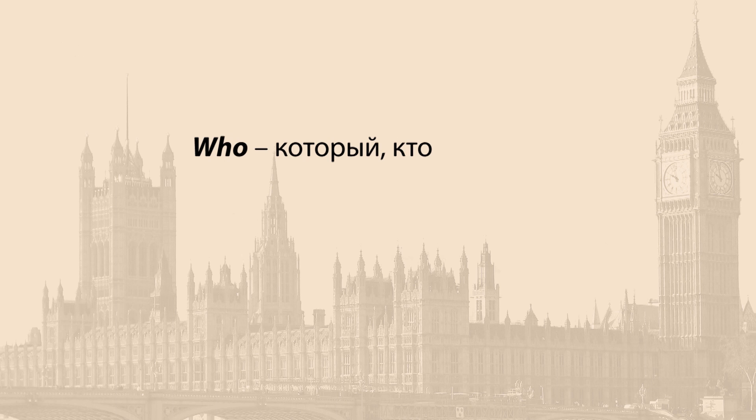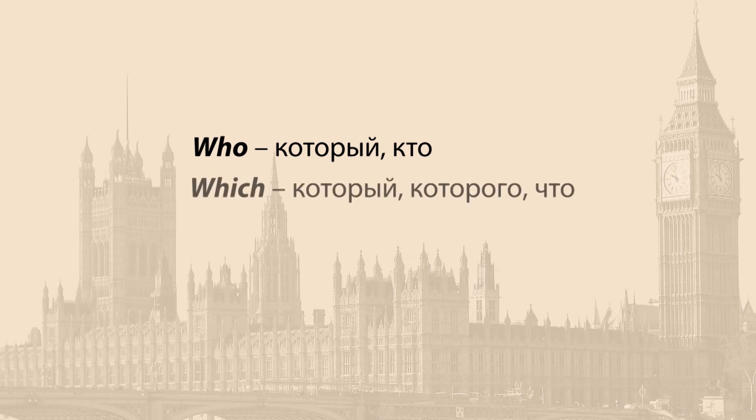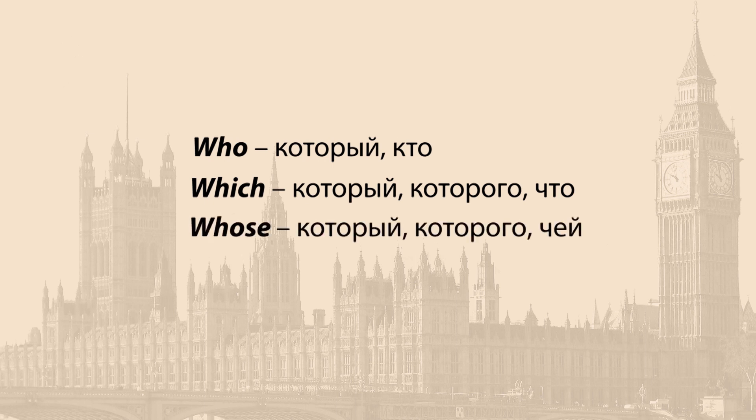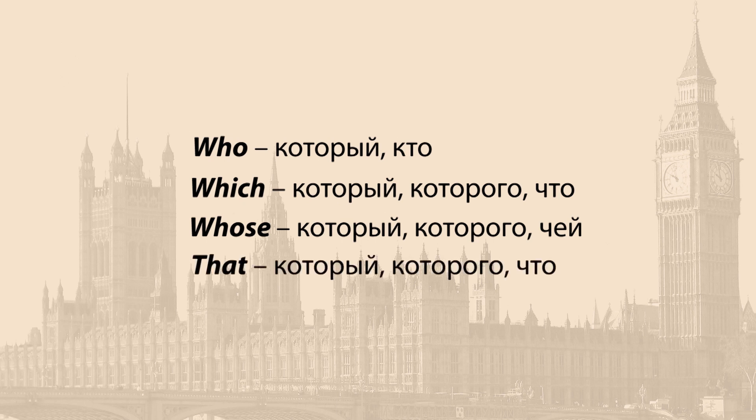А какие же это относительные местоимения? Относительные местоимения вводят определительные придаточные предложения и обычно переводятся как «который», «которые». Они всегда относятся к конкретному определяемому слову в главном предложении — обычно это существительное или местоимение. В эту группу входят: who (который, кто), which (который, которого, что), whose (который, которого, чей) и that.